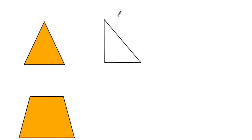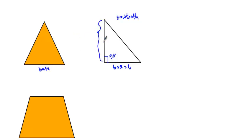If you encounter a triangular waveform, or a sawtooth waveform, you will see a right angle triangle. This angle will be the right angle. The base of this triangle is B and the height is H — the perpendicular distance from the base to the apex. The area of a triangle is half times base times height.